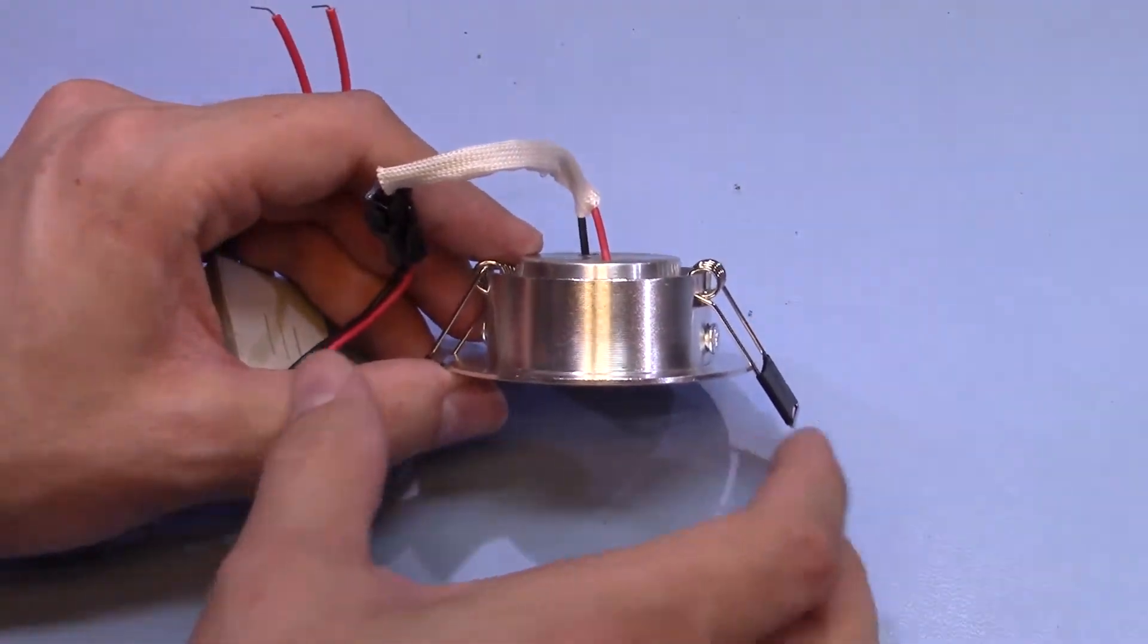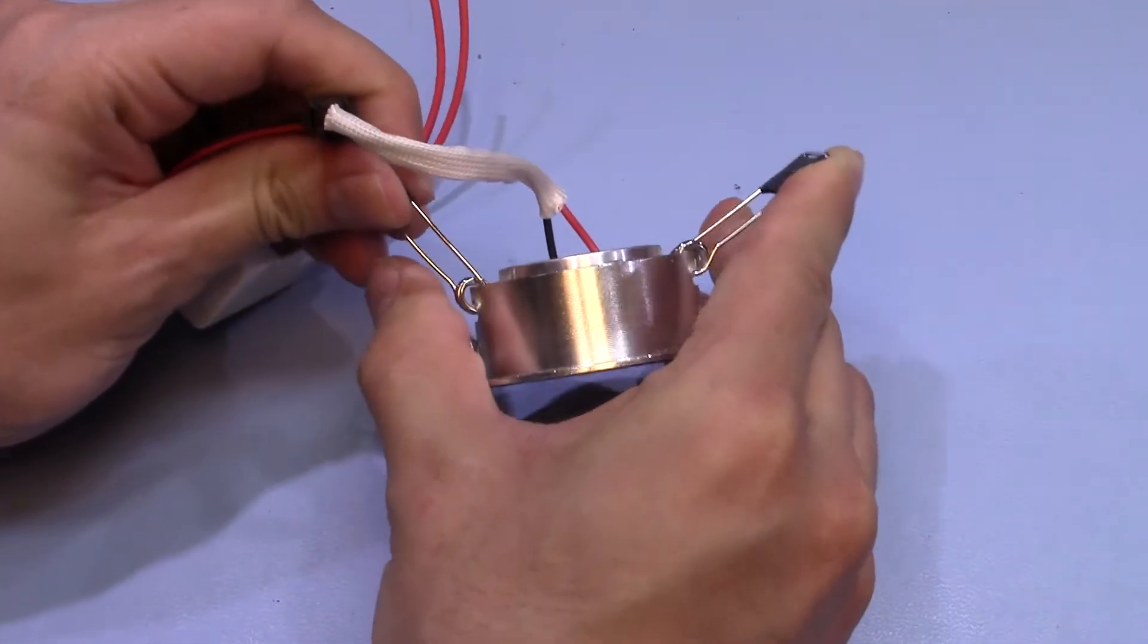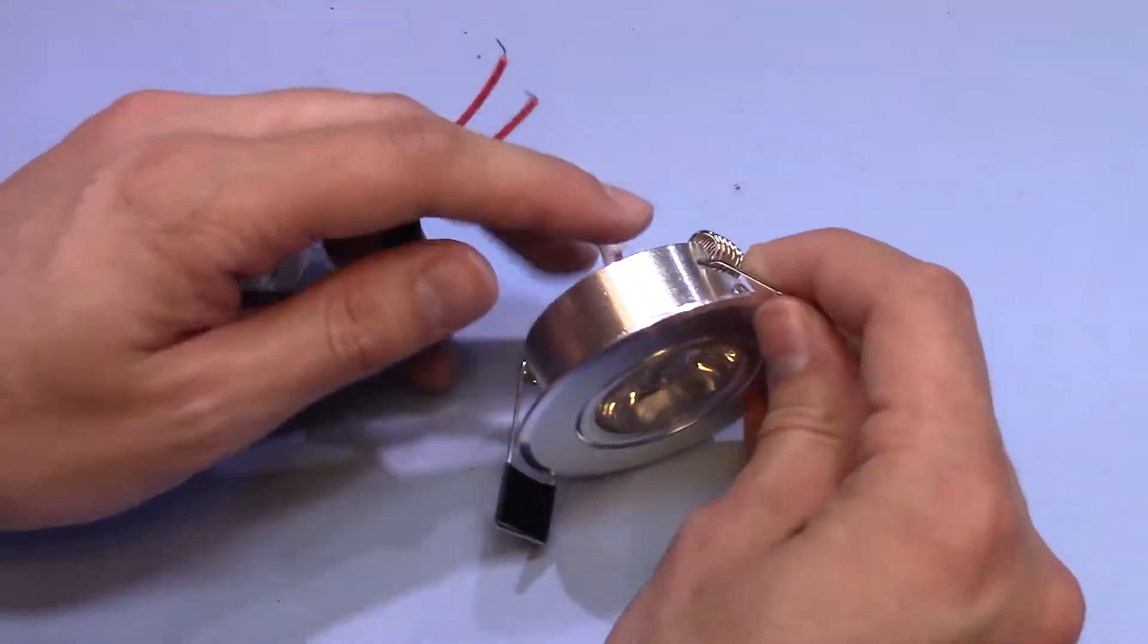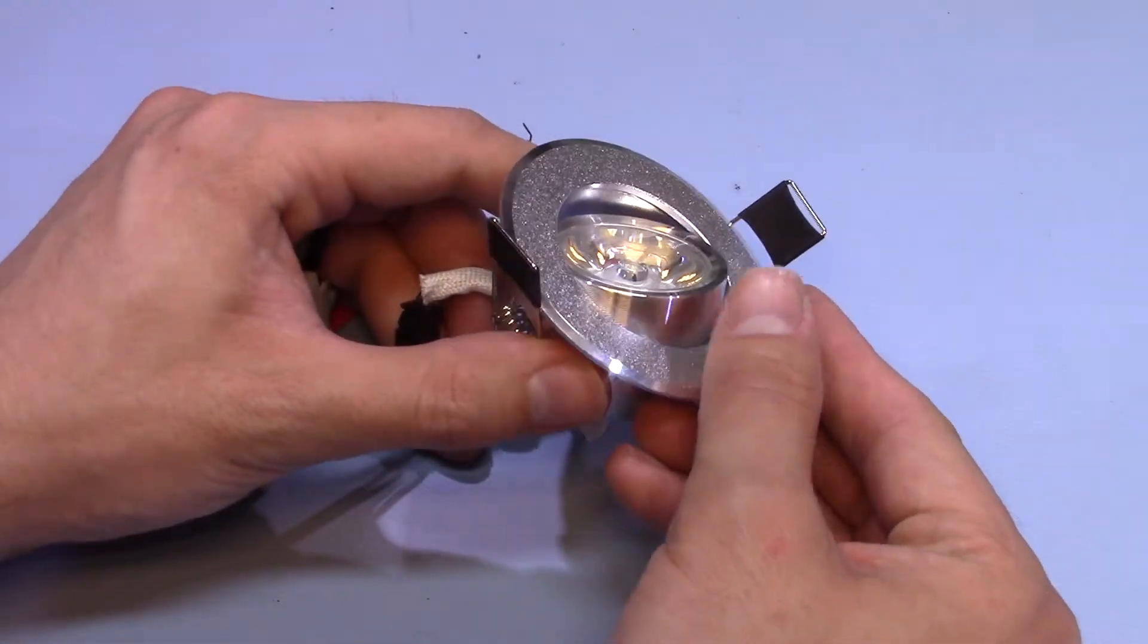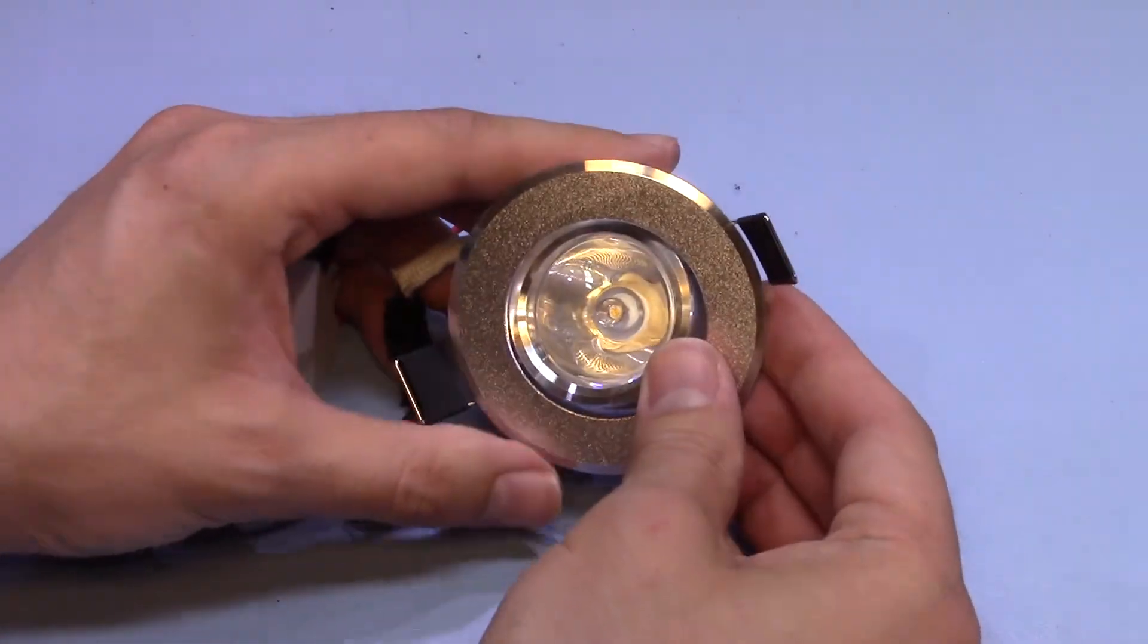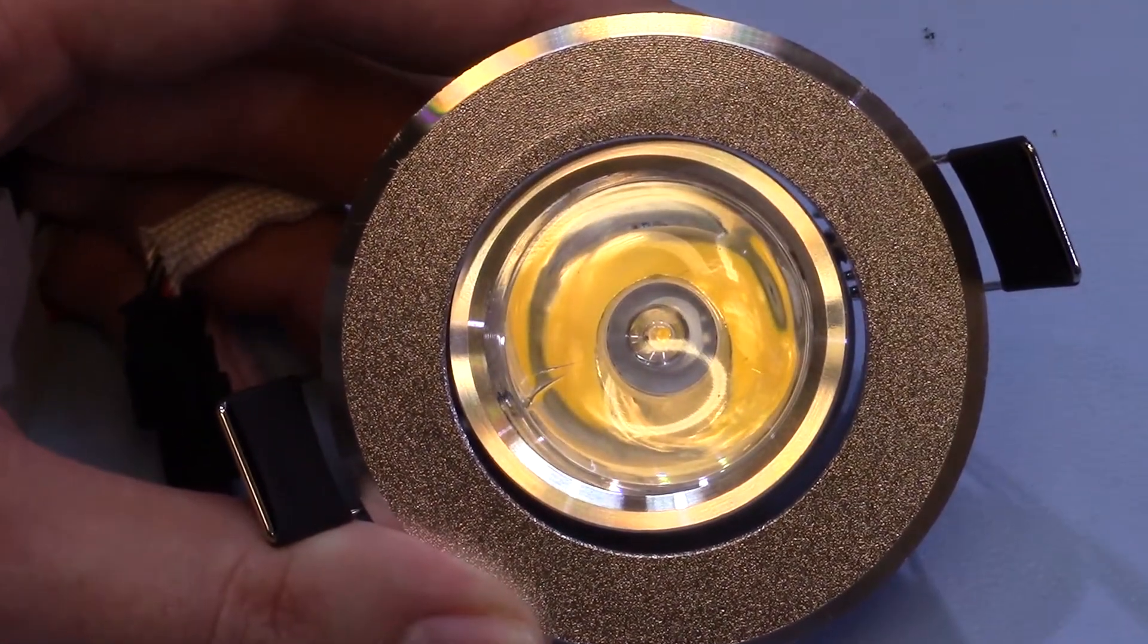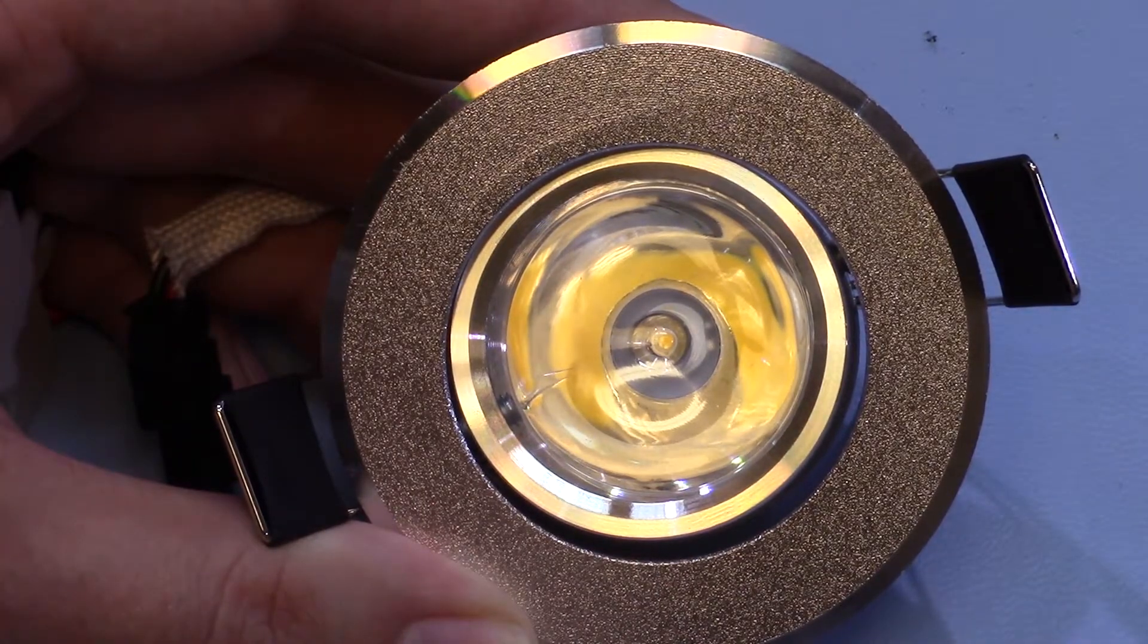We have spring clips here. The idea is you drill the hole in the ceiling, push them up through, and the clips clip down onto the top of the plasterboard. The LED is adjustable, you can point it at an angle towards the wall. In the middle we have the LED itself with a fairly large collimator, about 25 millimeters in diameter, and you can see the die of the one watt LED inside.